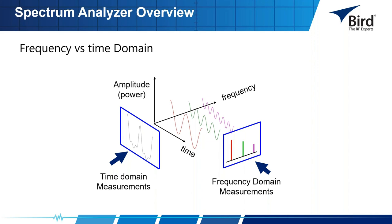Measuring with a frequency domain analyzer can greatly reduce the amount of noise present in the measurement because of its ability to narrow the measurement bandwidth. From this view, measurements of frequency, power, harmonic content, modulation, spurs, and noise can easily be made. We can determine total harmonic distortion, occupied bandwidth, signal stability, output power, intermod distortion, power bandwidth, carrier-to-noise ratio, and a host of other measurements using just a spectrum analyzer.